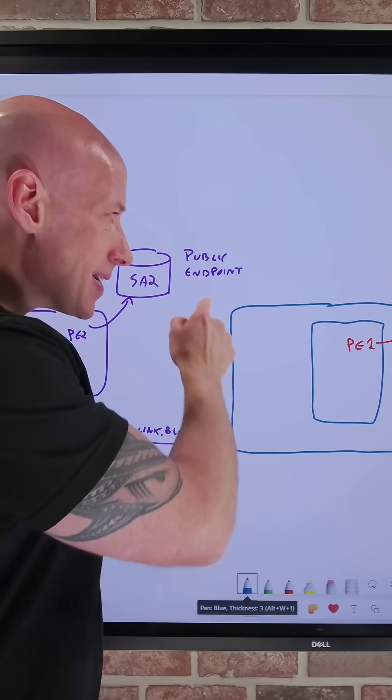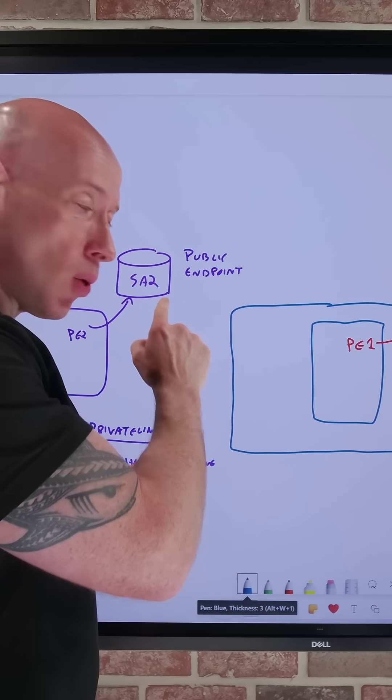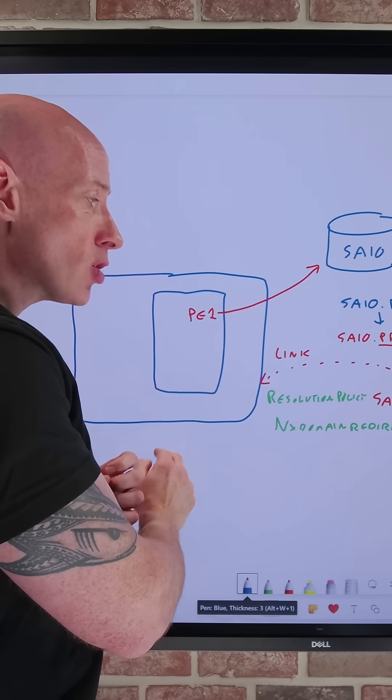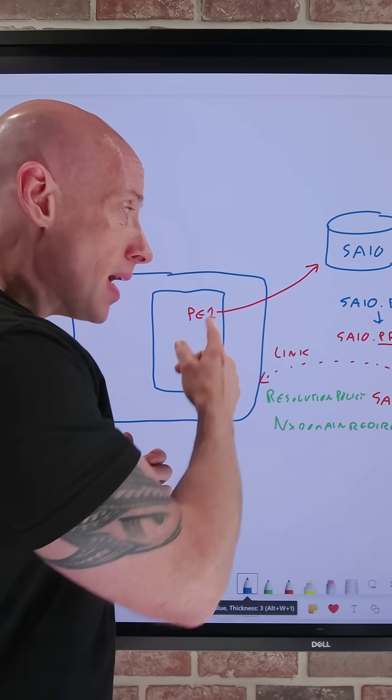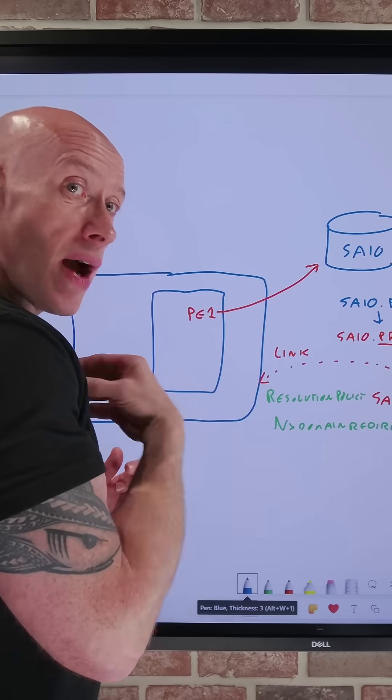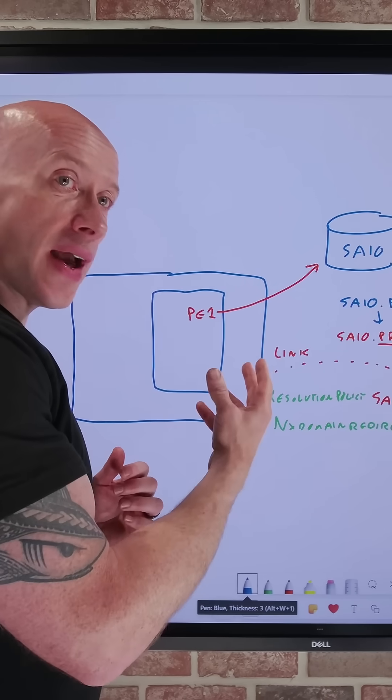Well, if I want to be able to access that service via its public endpoint, when I try and do a DNS resolution, I'll see that there is a private link alias, and when I query the zone instance I'm connected to, it won't find a record and it will fail.